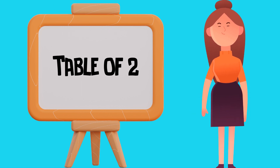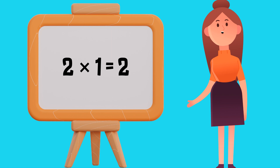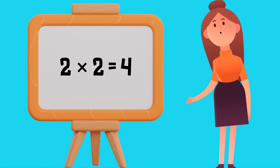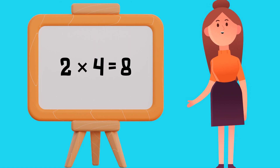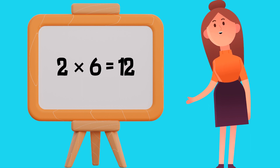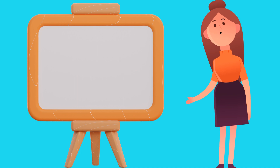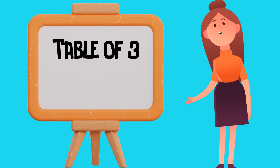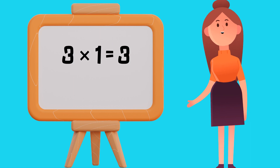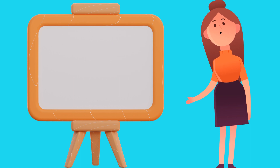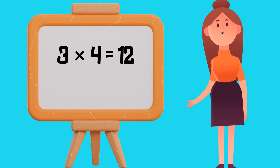Table of 2: 2 1's are 2, 2 2's are 4, 2 3's are 6, 2 4's are 8, 2 5's are 10, 2 6's are 12, 2 7's are 14, 2 8's are 16, 2 9's are 18, 2 10's are 20.